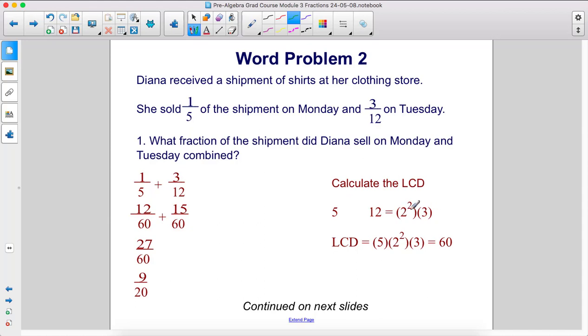12 can be broken down into 2 squared times 3. Therefore, we multiply 5 times 2 squared times 3 and we get 60.